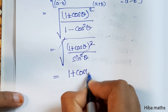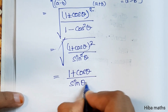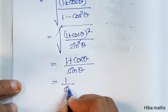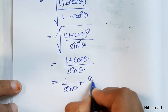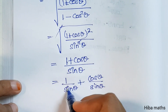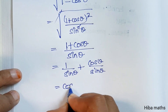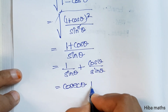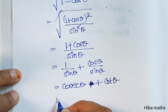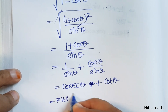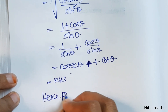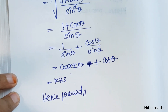We get (1 plus cos theta) divided by sin theta, which equals 1 over sin theta plus cos theta over sin theta, that is cosecant theta plus cot theta. Hence proved. Please let us know if you have any doubts in the comment section. Thank you for watching.